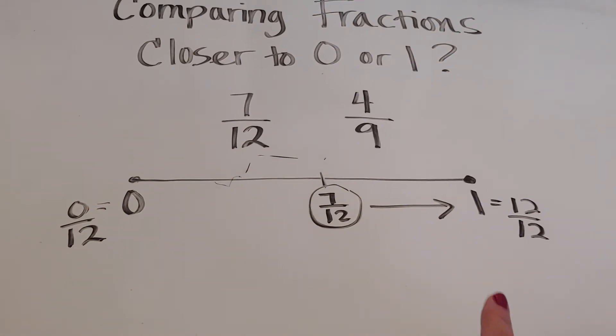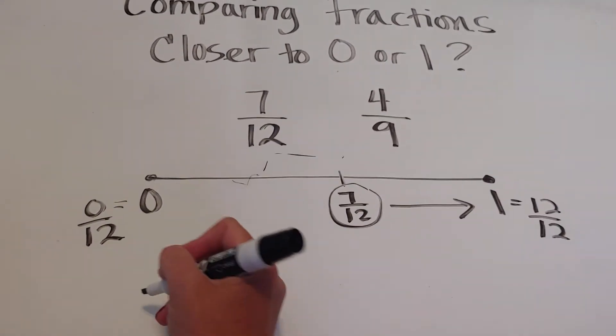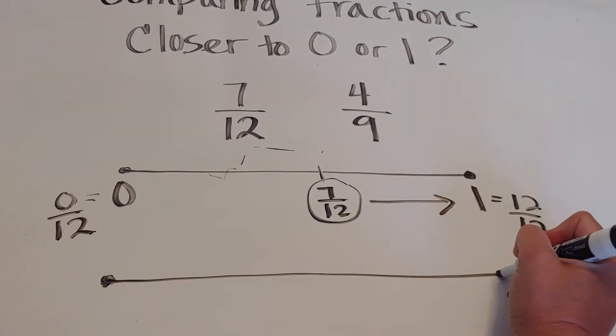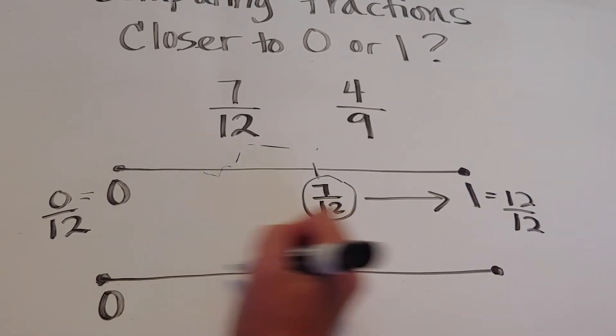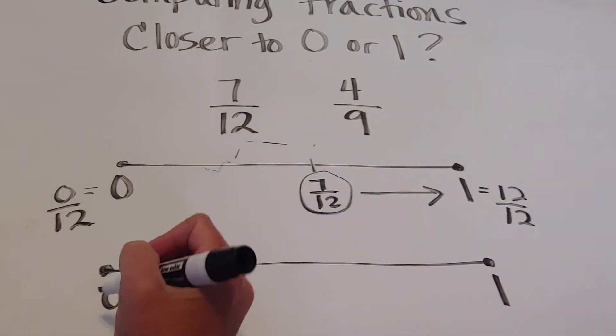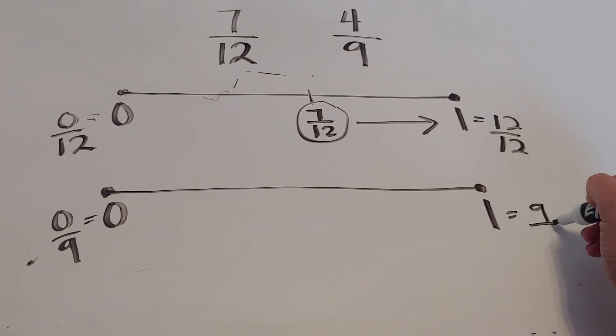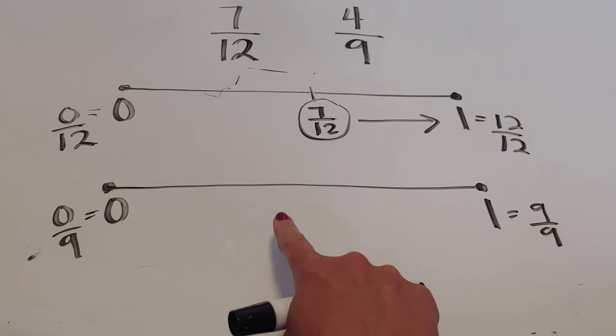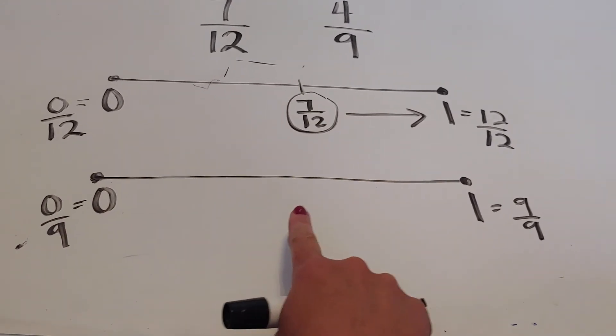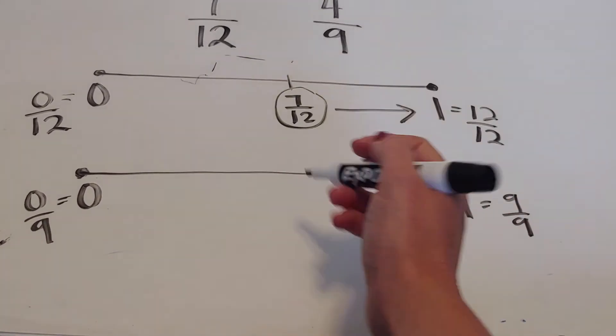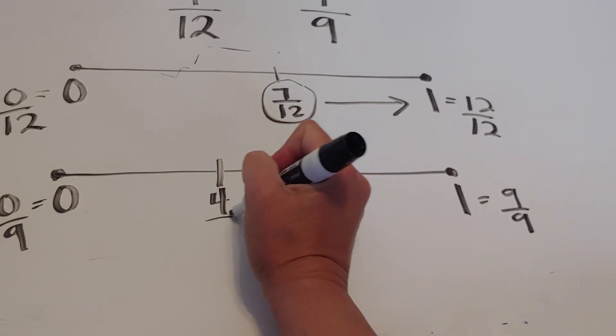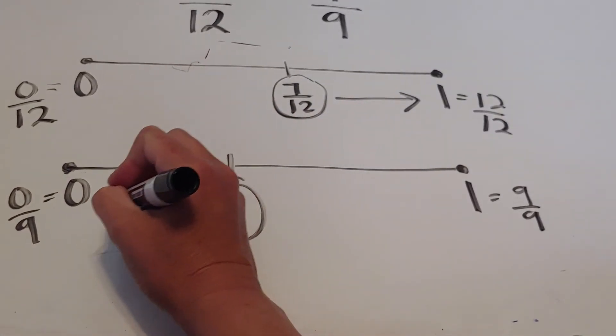Now let's look at four ninths. If I draw another line with zero and one, I have zero ninths and nine ninths. Is four ninths closer to zero ninths or to nine ninths? That's right, four ninths is closer to the zero side.